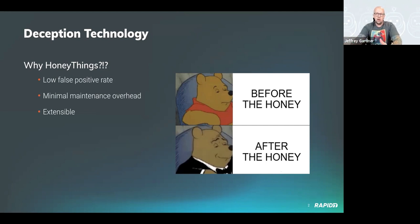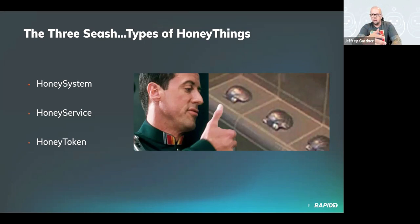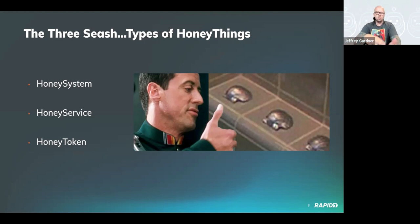Honey things are also extensible — you can change or increase the levels of interaction if desired. They generally come in three flavors: systems, services, and tokens. Systems would be like a Linux host configured to act as a honeypot. Services would be software configured to mimic the authentication process of an SSH server. Tokens would be something like a specially crafted document in a file share, a unique table in a SQL database, or an unused user account password. These types aren't exclusive — they can be used in conjunction with one another.